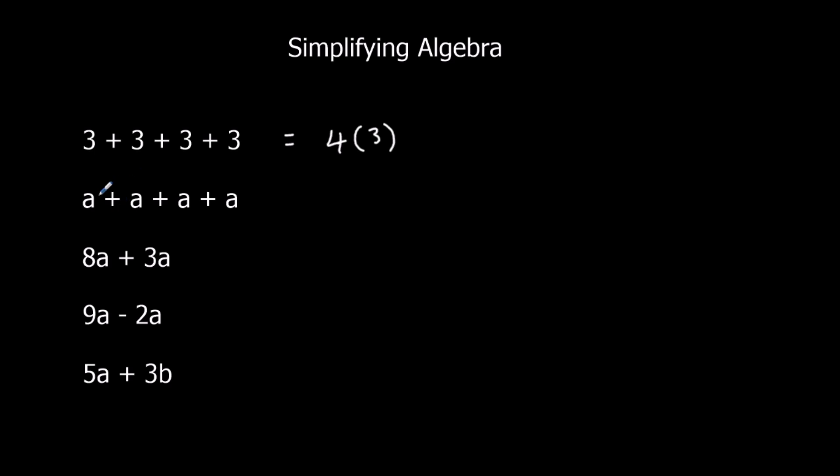The reason I've done that is because just below I've got a plus a plus a plus a, which is 4 a's. So that's 4 times a. Okay, do not get this confused with a times a times a times a, which makes a to the power of 4. This is plus, so I've got 4 lots of a. a plus a plus a plus a is 4 lots of a. We just write that as 4a.